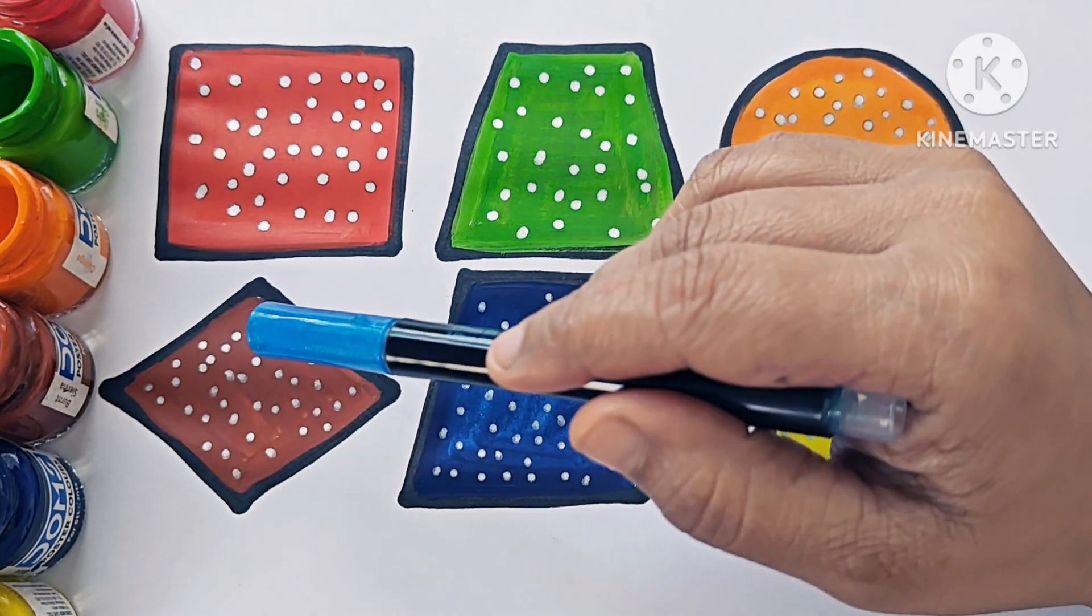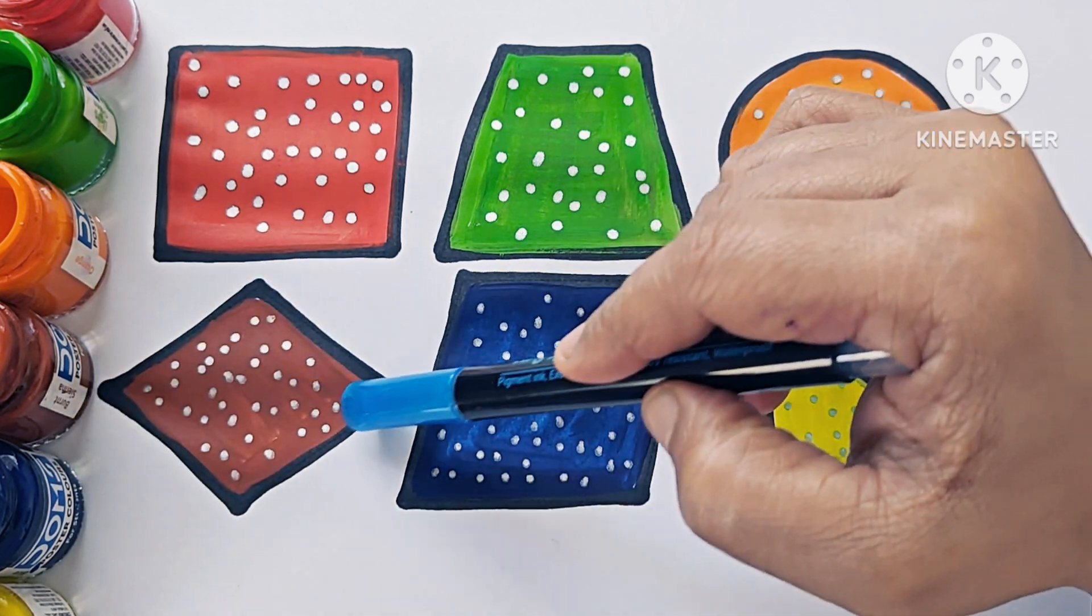This is diamond or rhombus. It has four sides: 1, 2, 3, 4.